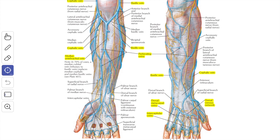Next we'll see about the palm of the hand. The ulnar side of the palm including the medial one and a half fingers is supplied by the superficial branch of the ulnar nerve. The superficial branch of the ulnar nerve also supplies the dorsal surface of the distal one and a half phalanges of the medial one and a half fingers.